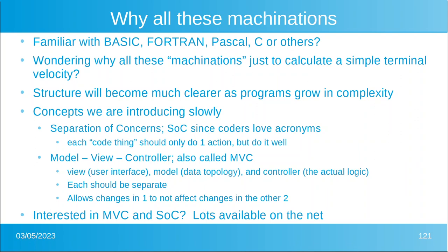You can look these up on the net. Separation of concerns — SOC, because we all love acronyms — means each piece of code should only do one action, but it should do it really well. Then there's model-view-controller: the view is how we interface with the user, the model is how we actually store the data, and the controller is how we process that data — the actual logic. Each is in a separate file. This goes back to not repeating yourself, and it allows changes in one piece to not affect the other two. It makes debugging much easier. There is a ton of information available on the internet, and this is the end of number 10 — hope you enjoyed it.